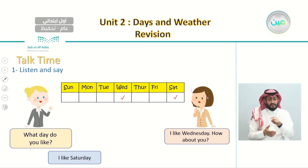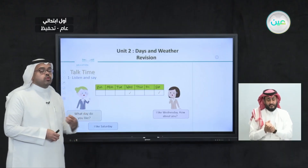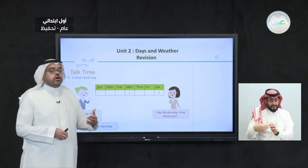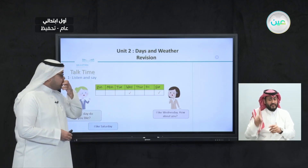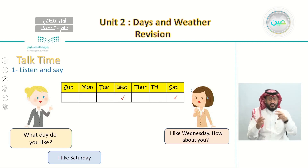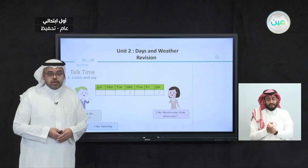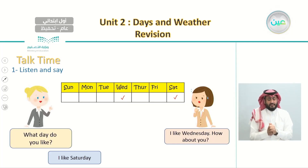For example, one girl asked her friend, 'What day do you like?' We use this question to find out what the other person's favorite day is. We also have a list of seven different days, and you can make a similar table and put a check mark on your favorite day. Her friend says, 'I like Wednesday. How about you?'